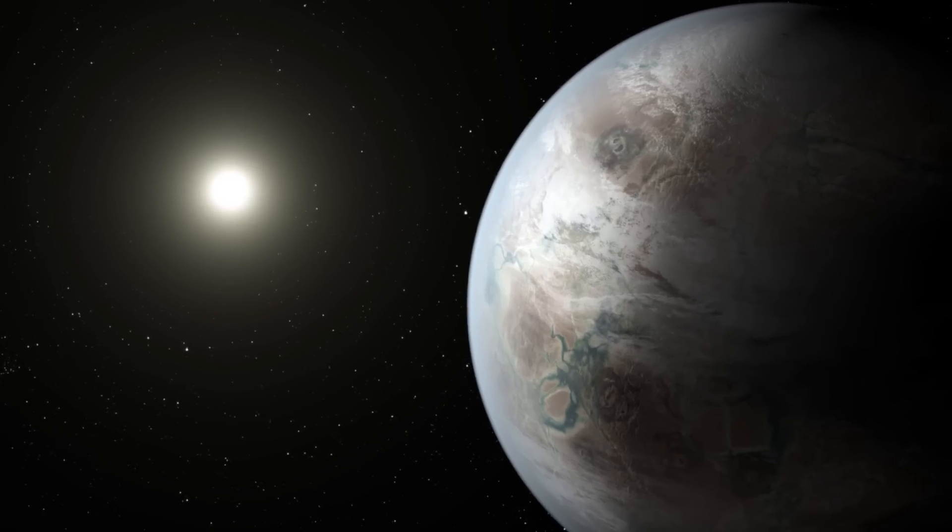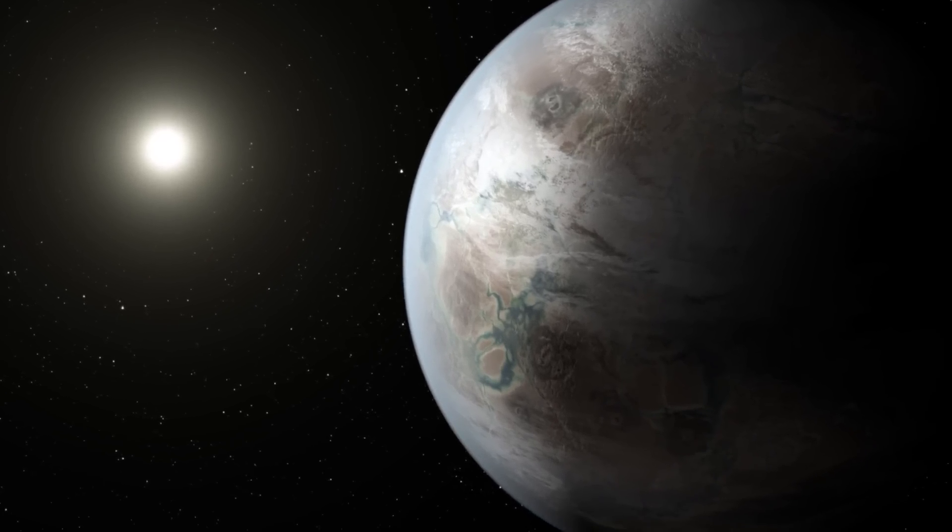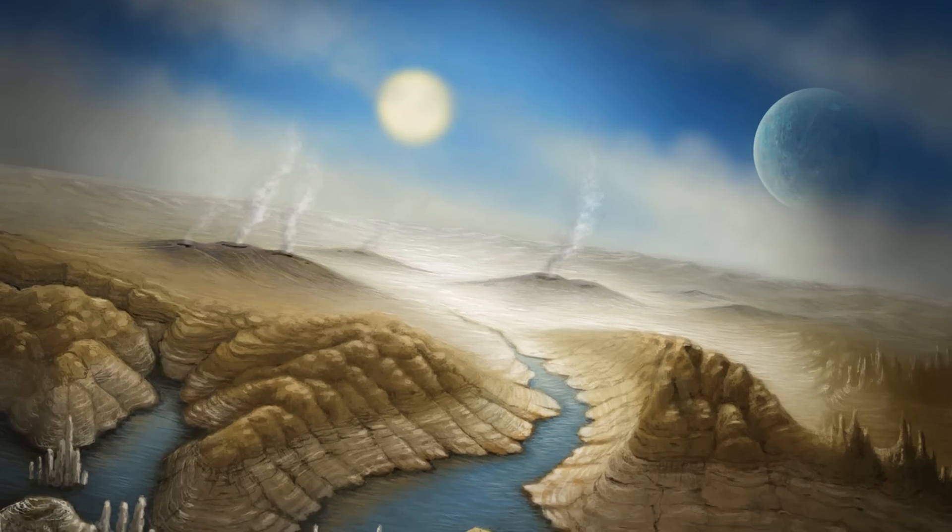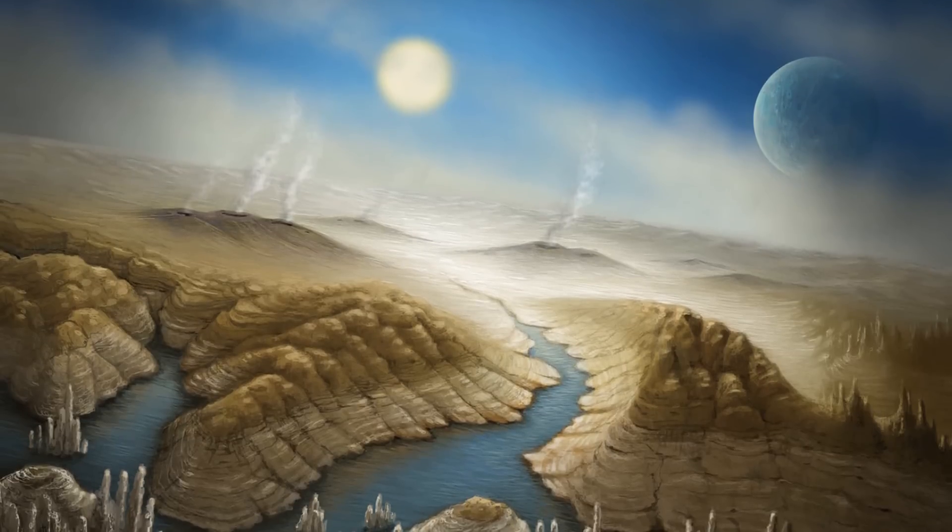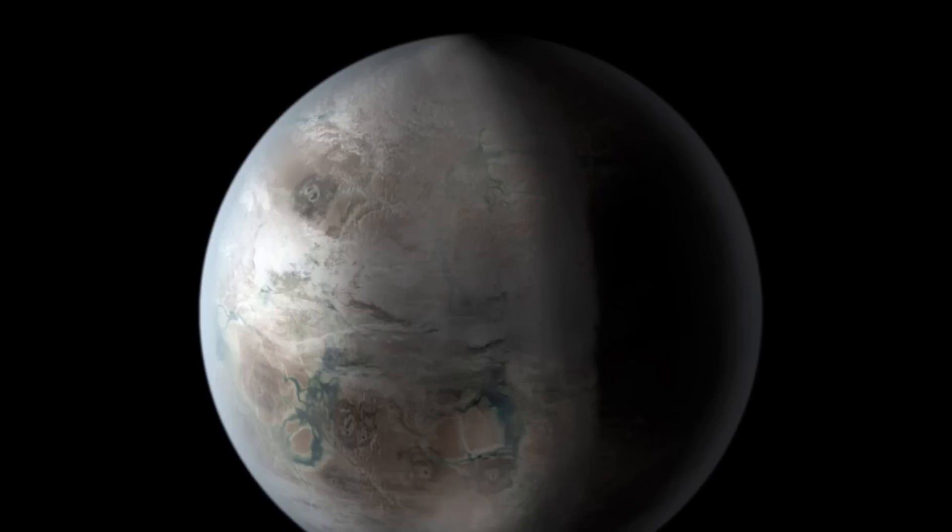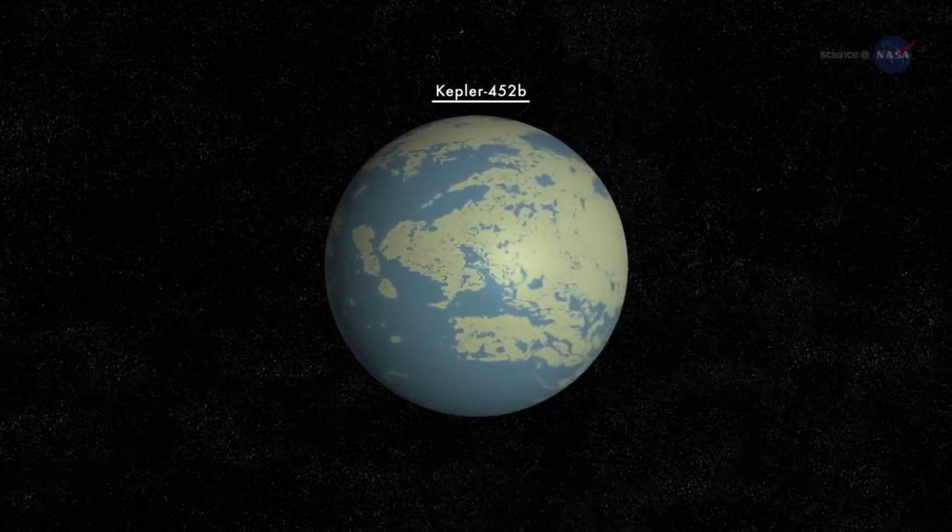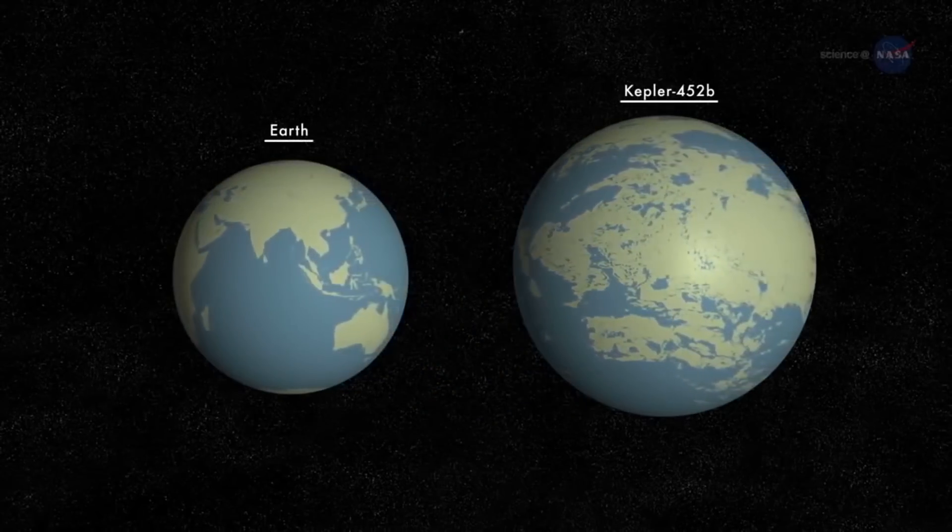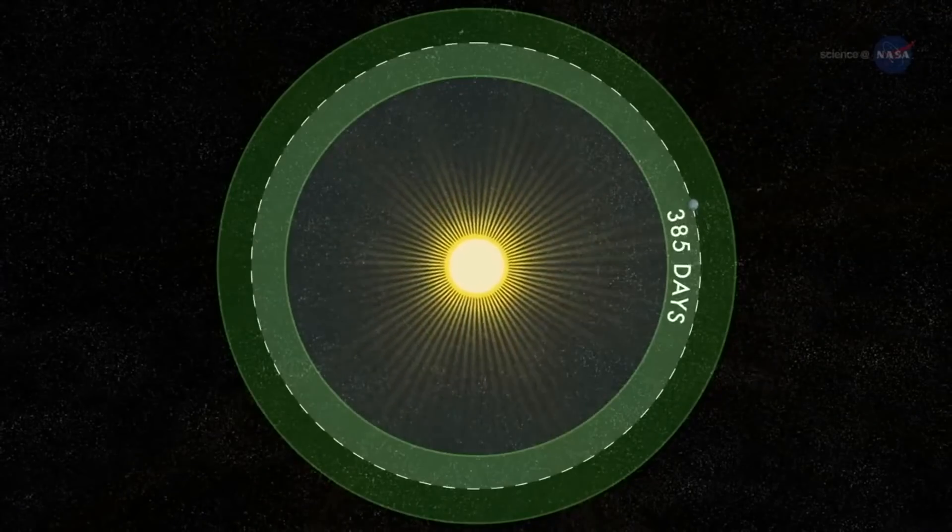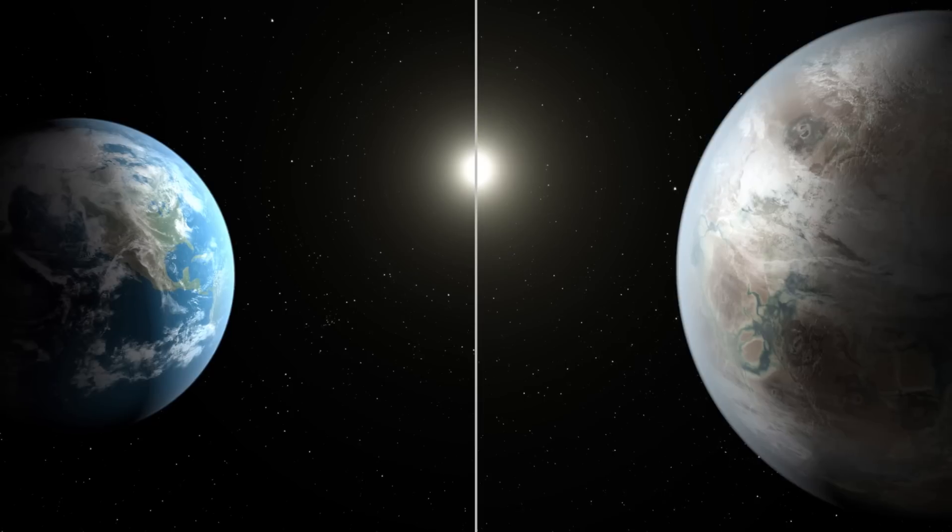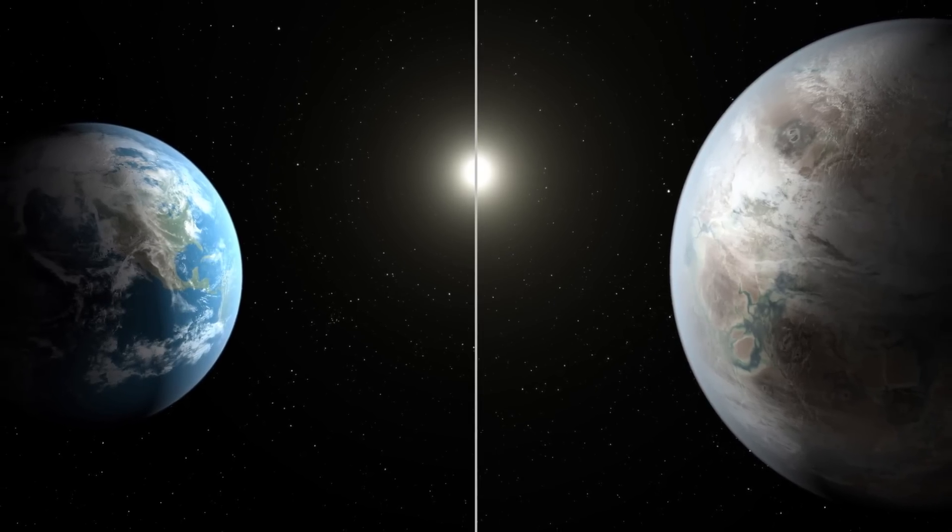While 452b's smaller radius indicates it may have a rocky terrestrial surface, the habitability of the exoplanet remains widely unknown, though it's believed to be subjected to a runaway greenhouse effect. The exoplanet is approximately 60% larger than Earth and has a year that's only 5% longer than her own, earning it the title of Earth's Cousin.